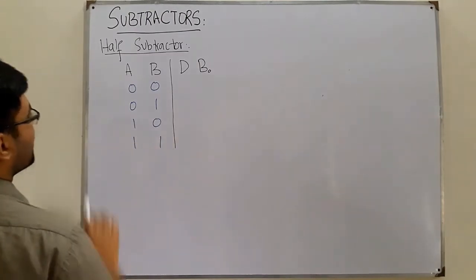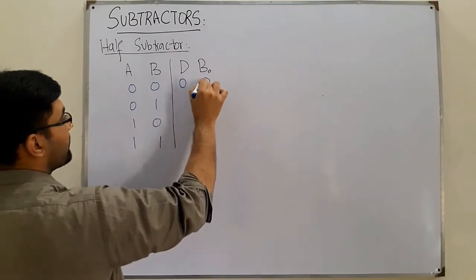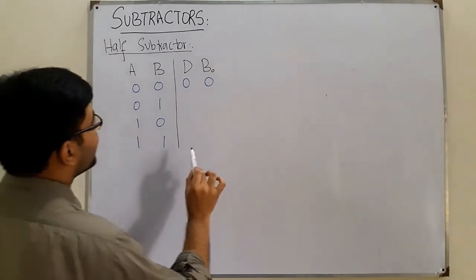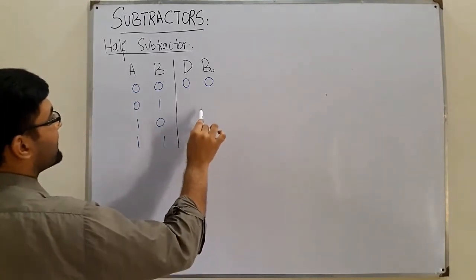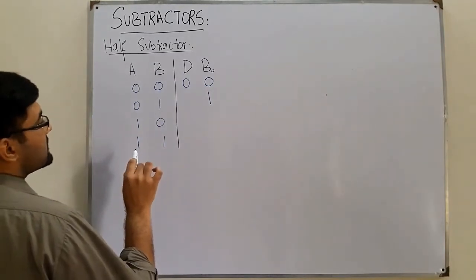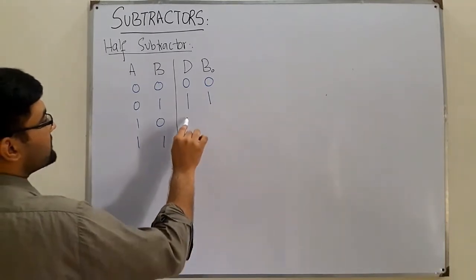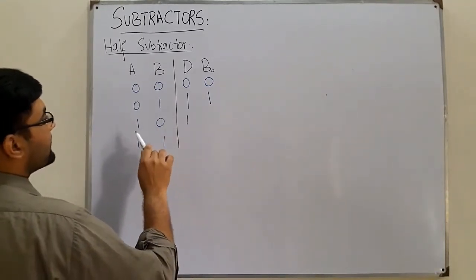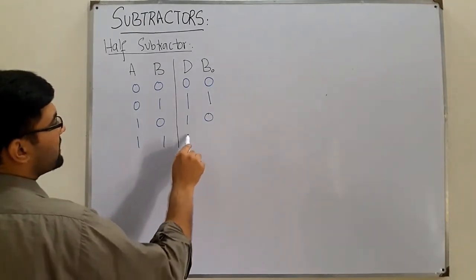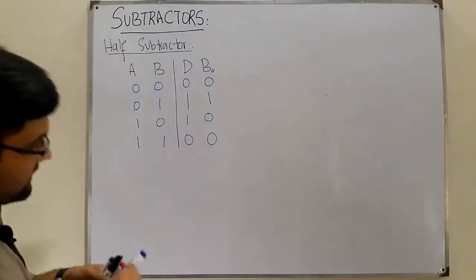The input combinations are 00, 01, 10, and 11. Subtracting 0 minus 0 gives borrow 0 and difference 0. Subtracting 0 minus 1 requires a borrow of 1, so 2 minus 1 gives difference 1. For 1 minus 0, difference is 1 and borrow is 0. For 1 minus 1, difference and borrow are both 0.